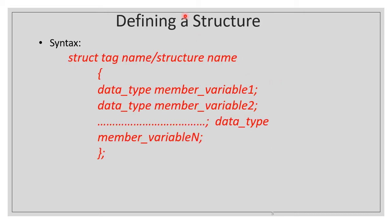How to define a structure in C? We use the struct keyword followed by the tag name (the structure name), then curly brackets open, member variables declared inside, curly brackets closed followed by a semicolon. Each member variable is declared with a data type followed by the member variable name and a semicolon.